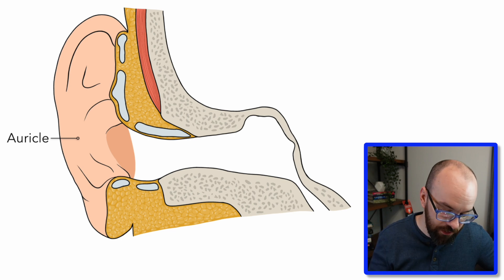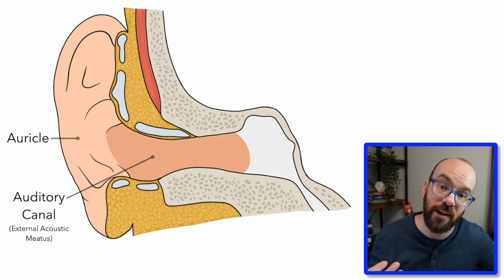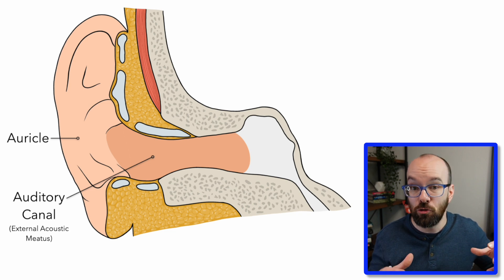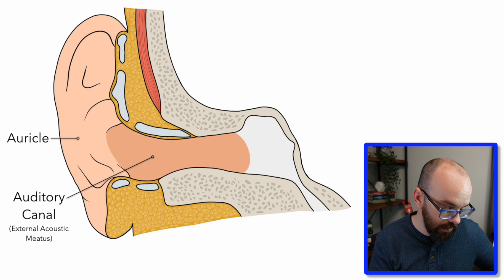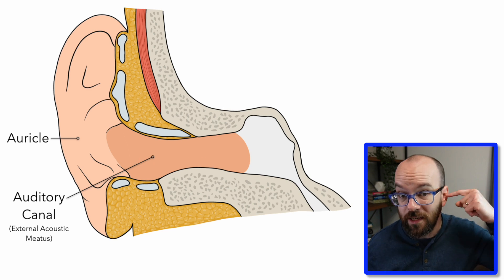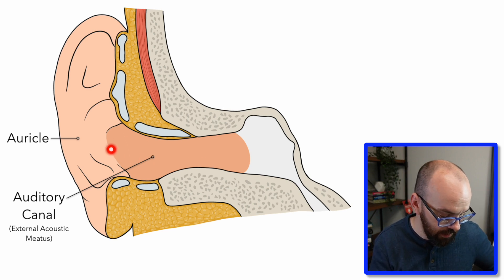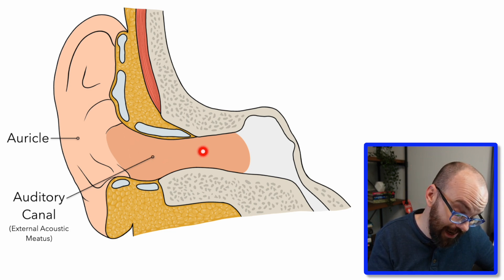The auricle is going to funnel sound vibrations into our auditory canal, also known as the external acoustic meatus. This is a tube that runs through the skull into the inner parts of the ear. It's the part that, if you take your finger and stick it in your ear, you're sticking your finger into. If you were to take a Q-tip, you could get it even further down.